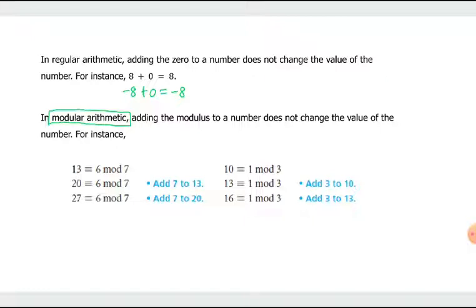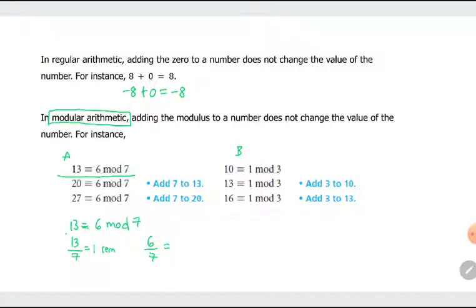Looking at Example A: 13 is congruent to 6, modulo 7. To confirm the congruence is true, divide 13 by 7 and 6 by 7, and check if their remainders are equal. 13 divided by 7 gives a quotient of 1 and a remainder of 6. And 6 divided by 7 gives a quotient of 0 with a remainder of 6. So the congruence is confirmed true.